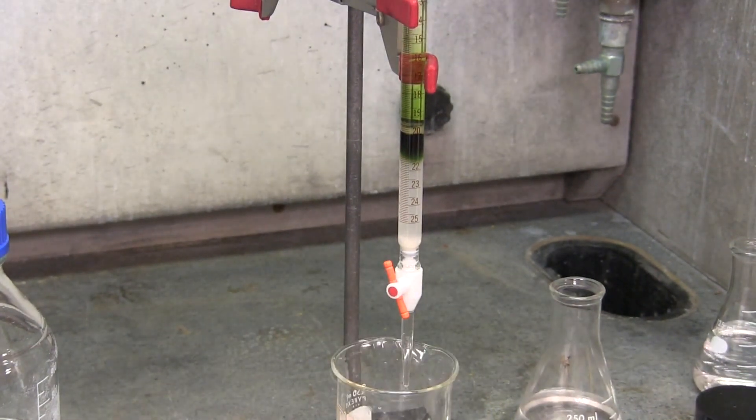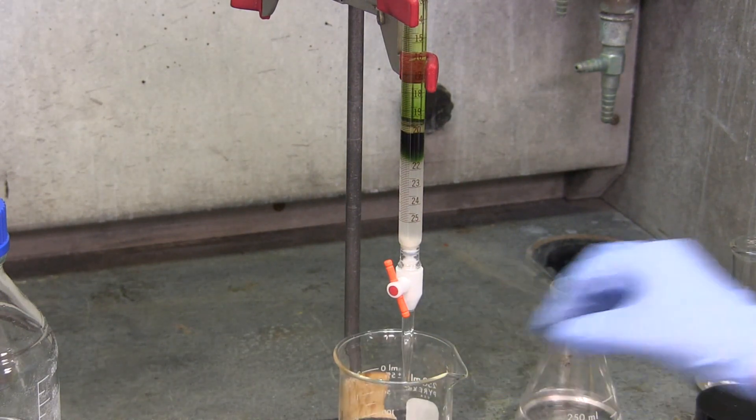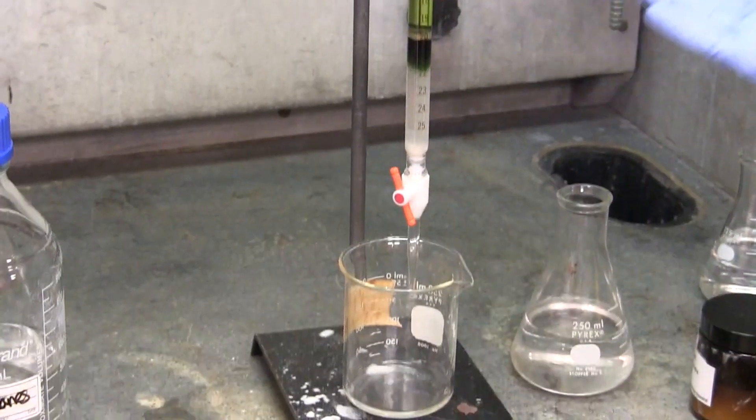As the column runs, make sure to add solvent in order to keep the column from drying out and cracking. The waste beaker can be kept under the burette until the first fraction is collected in a 25ml Erlenmeyer flask.